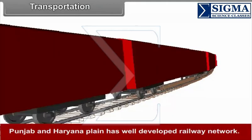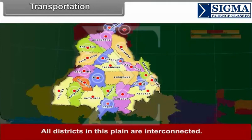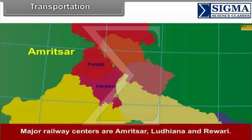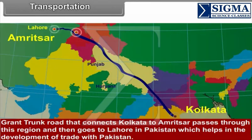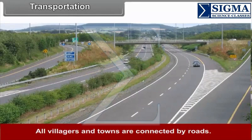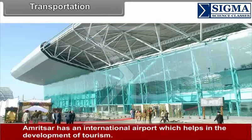Transportation: Punjab and Haryana plain has a well-developed railway network, with all districts interconnected. Major railway centers are Amritsar, Ludhiana and Rewari. The Grand Trunk Road, connecting Kolkata to Amritsar, passes through the region and then goes to Lahore in Pakistan, helping in the development of trade with Pakistan. All villages and towns are connected by roads. Amritsar has an international airport which helps in the development of tourism.